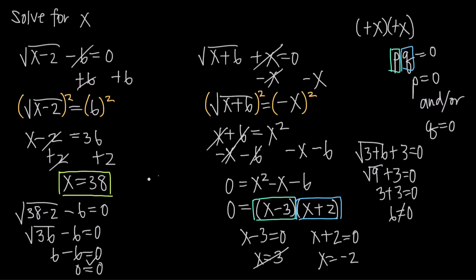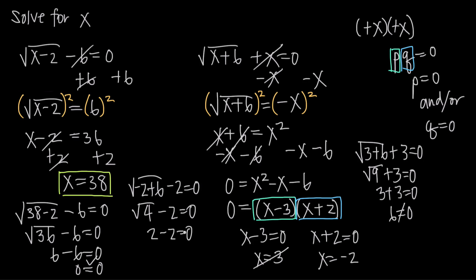Checking x equals negative 2: we get the square root of negative 2 plus 6, minus 2, equals 0. That's the square root of 4 minus 2 equals 0, or 2 minus 2 equals 0, giving 0 equals 0 — which checks out. So x equals negative 2 is the only valid solution. This perfectly illustrates why you must always check your answers back into the original equation, since x equals 3 appeared to be a solution but was actually extraneous.